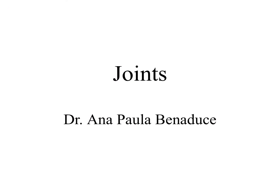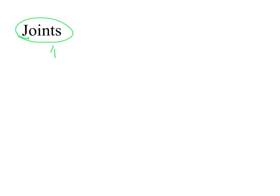Hi guys, here is Dr. Benaduce. Today we'll be talking about joints. The first thing we need to do is to define what a joint is. A joint is the place where bones join together, and another word for joint is articulation.